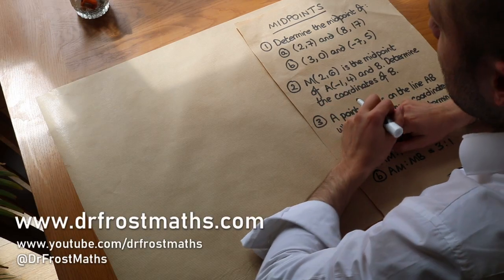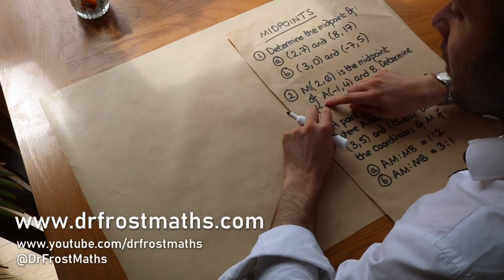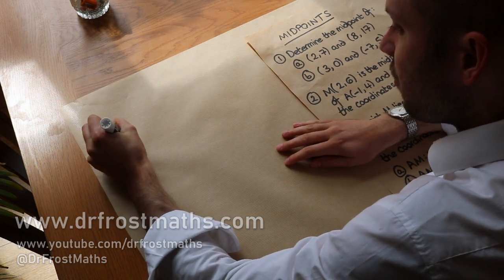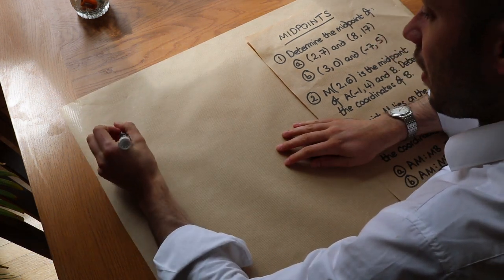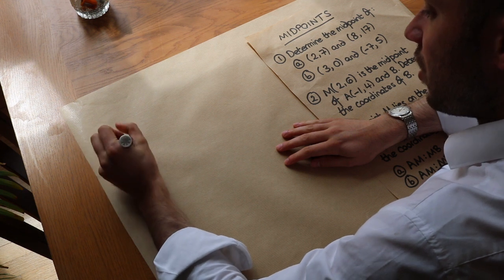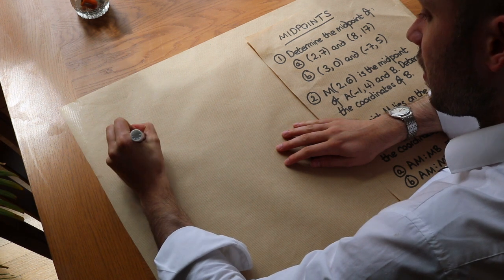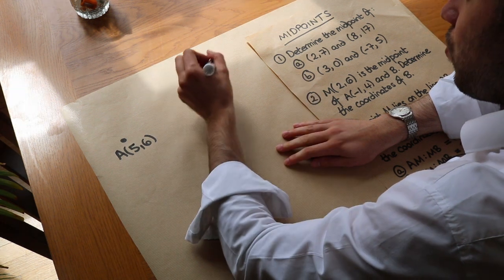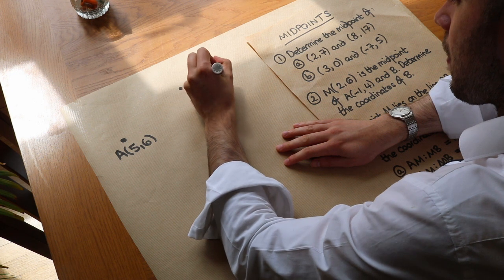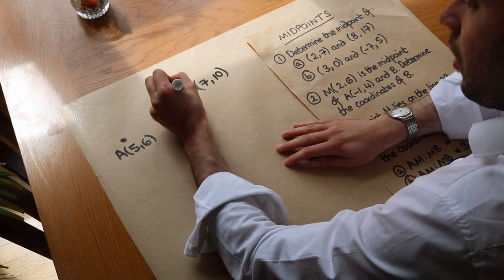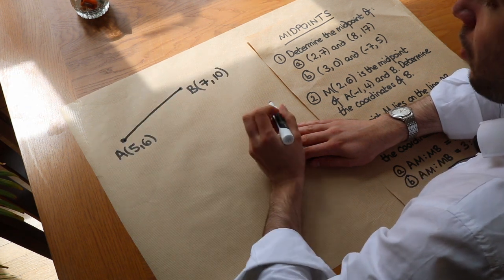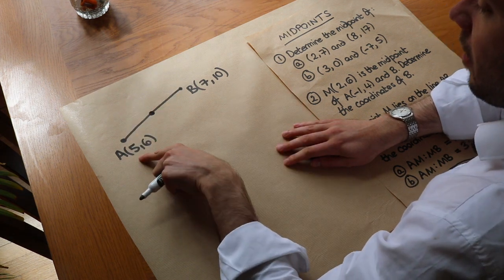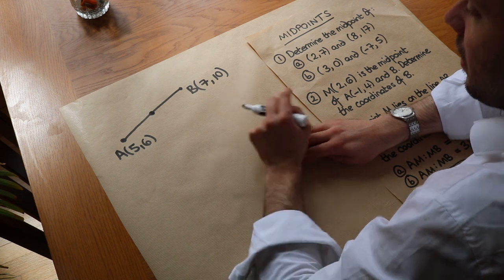Hello and welcome to this Dr. Frost's maths video on midpoints. What I mean by midpoint — if I just take this example here — is if I have two coordinates, let's say I've got point A at (5, 6), and I've got a point B with coordinates (7, 10), and I was to draw a line between them, I might want to know what point is exactly halfway between (5, 6) and (7, 10).